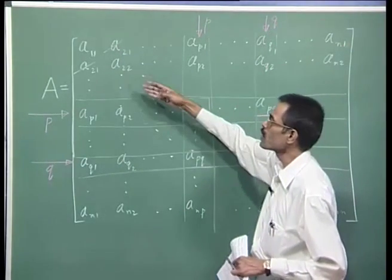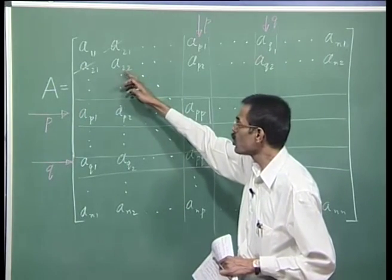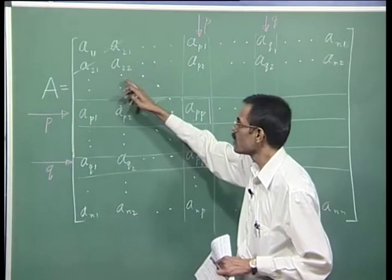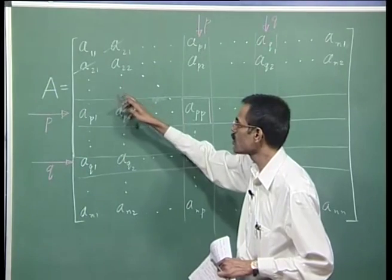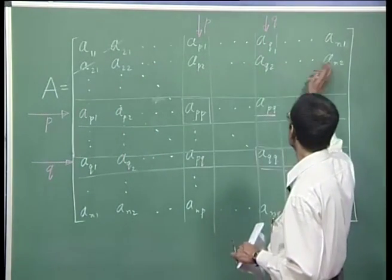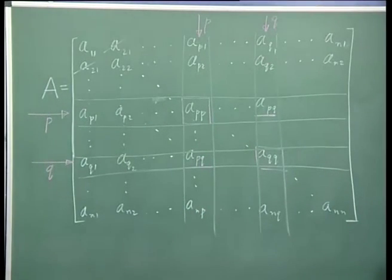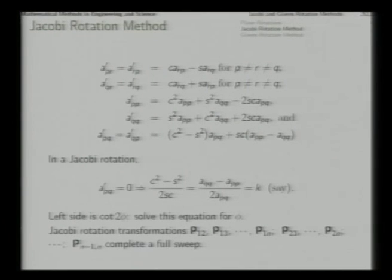Next we move to the second column and second row, and below the A22 diagonal entry we try to make these elements zero one by one. That means if we continue like this, we will have a complete sequence of operations: P12 to P1n, then P23 to P2n, then P34 to P3n, and so on.